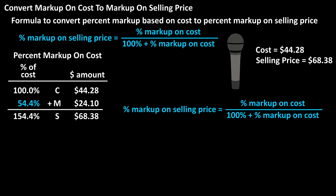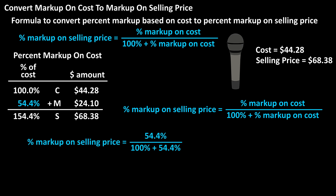Using the formula, we have 54.4% divided by 100% plus 54.4%, which gives us 54.4% divided by 154.4%. We then convert the percents to decimals.